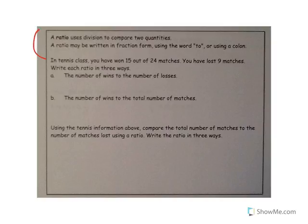A ratio uses division to compare two quantities. A ratio may be written in fraction form, using the word 'to', or using a colon. For example here, in tennis class, you have won 15 out of 24 matches. You have lost 9. Write each ratio in three ways. So the number of wins to the number of losses. I'm going to write these out quickly. So wins to losses, one way of writing is going to be 15 wins to 9 losses. Another way of writing is 15 to 9. And again, this is just different ways of representing the same thing. All those mean exactly the same thing.